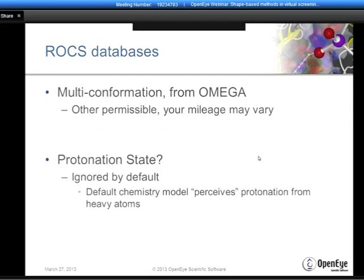One commonly arising question about database preparation is: how should I protonate my molecules? In ROCS, the simple answer is that it doesn't matter. The protonation state in the default method is essentially perceived from the heavy atoms only—so a carboxylate, two oxygens and a carbon, is perceived as an anion and an acceptor regardless of the actual presence or absence of a proton. You can account for that using a non-default chemistry perception method, but that's not the default. This simplifies your life because the protonation state is applied consistently and quickly across all molecules in the database.